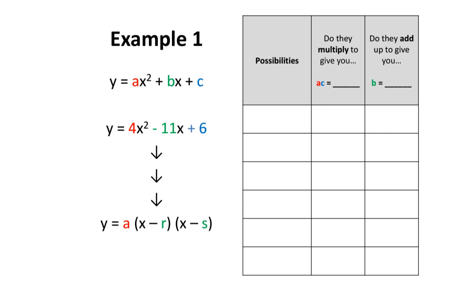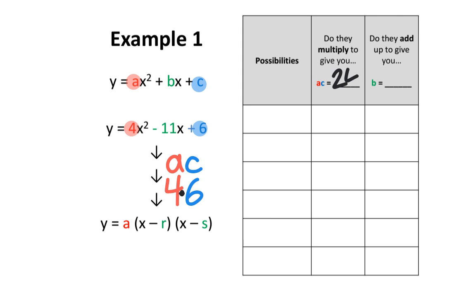Let's start by looking at AC. What exactly does AC mean? Well, A is 4, so let's write that down over here. And C is positive 6, so let's write that down over here as well. This looks like 46, but there's actually a hidden multiplication sign in between these two numbers. So 4 multiplied by 6 gives us 24.